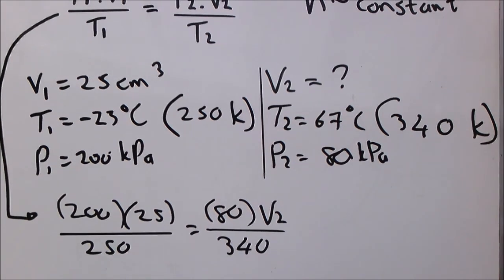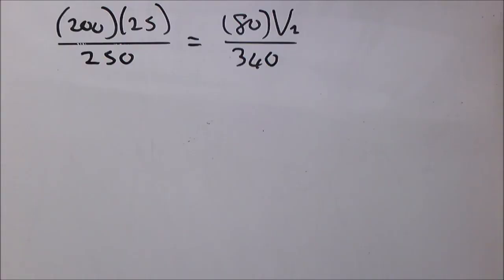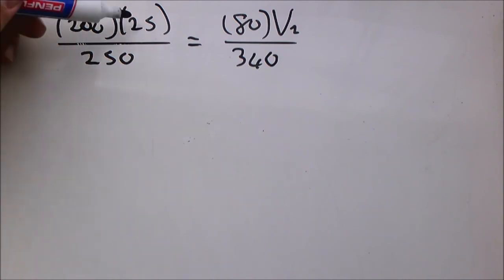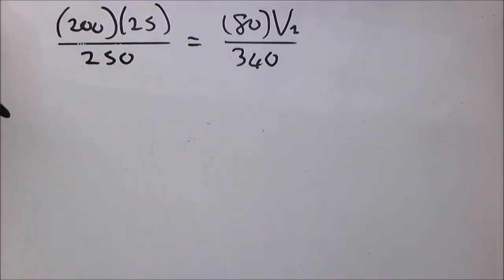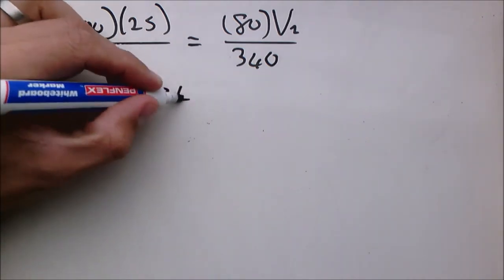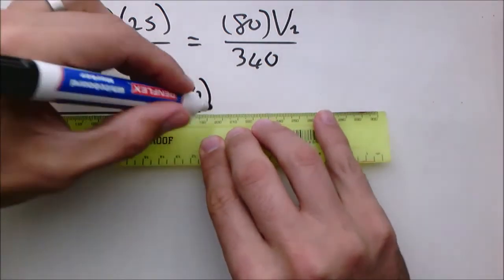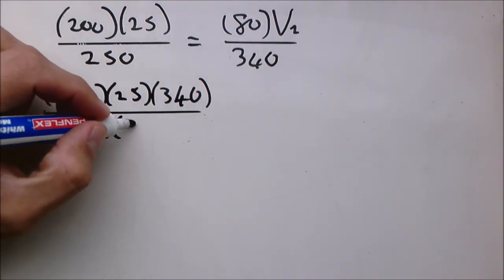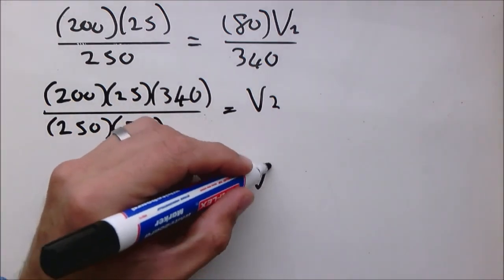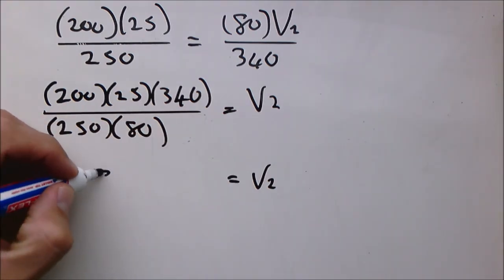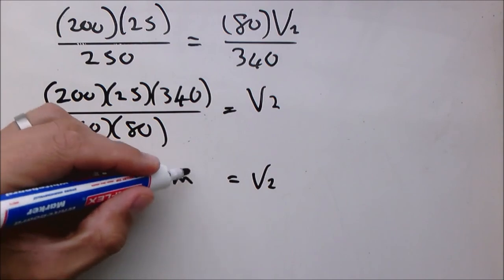V2 is our unknown that we want to calculate, and T2 is 340. From here on we can simplify and calculate. After simplification, multiplying 200 times 25 times 340, and dividing by 250 and 80, we get V2 equal to 850 cubic centimeters.